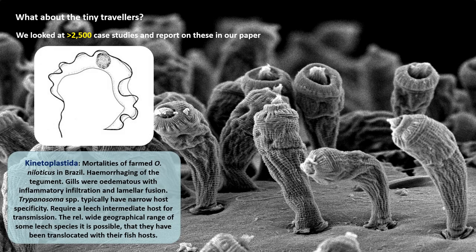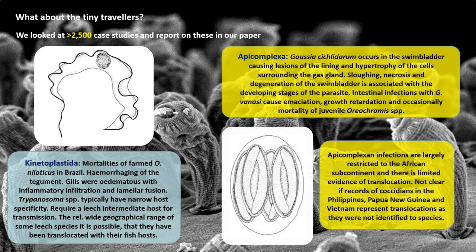Starting with the protists, we see mortalities of Nile tilapia in Brazil due to trypanosomes. These typically require a leech as an intermediate host. However, given that each trypanosome has a narrow host range but certain leech species have a very wide distribution, it is likely that the trypanosomes have spread with shipments of tilapia and then used local leech populations. The picture for apicomplexans like Goosea cyclodarum, which can damage the swim bladder, is less clear.